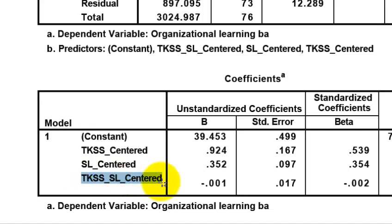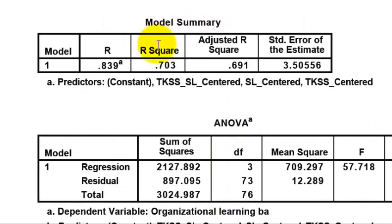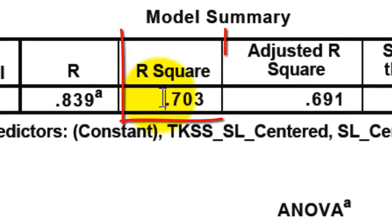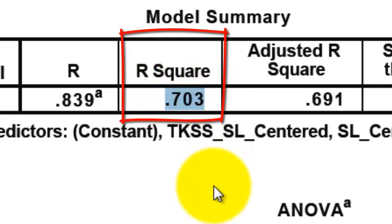I'm not 100% sure why you would center the variables, but I'm just going to give you my two cents. First of all, you've got to look at the R-squared. This is a huge R-squared — in other words, 70% of the variance of your DV can be explained by what you did with your IVs.